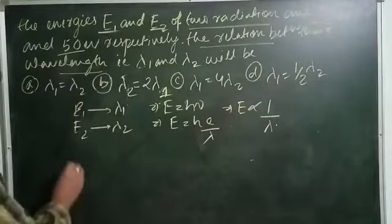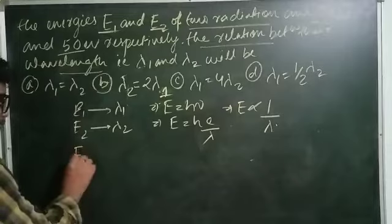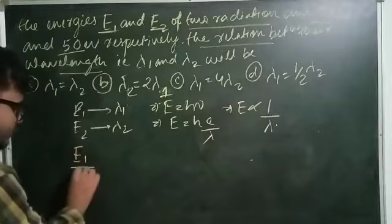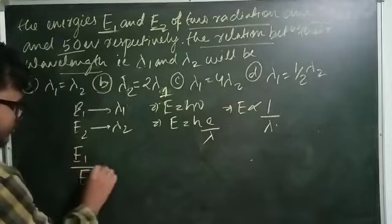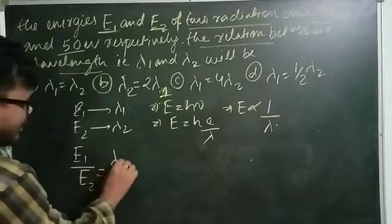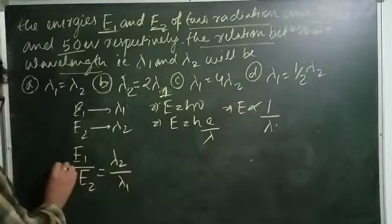So E1 by E2 will be equal to lambda 2 by lambda 1.